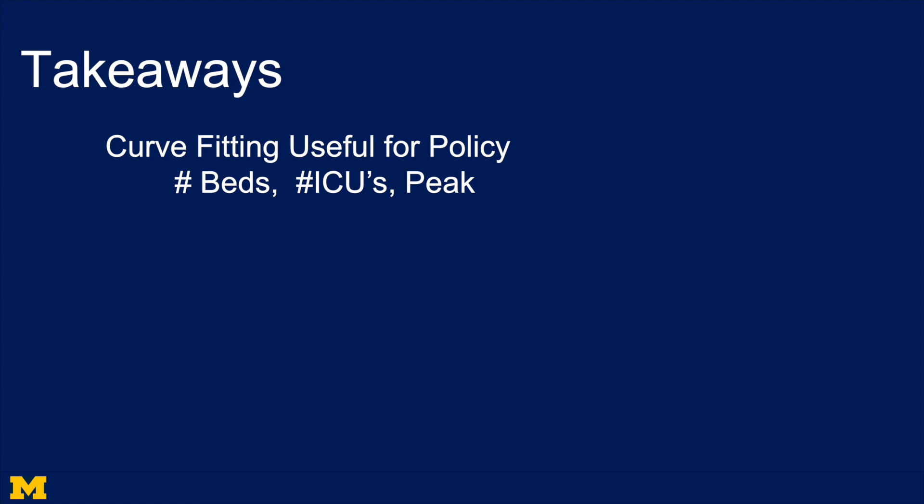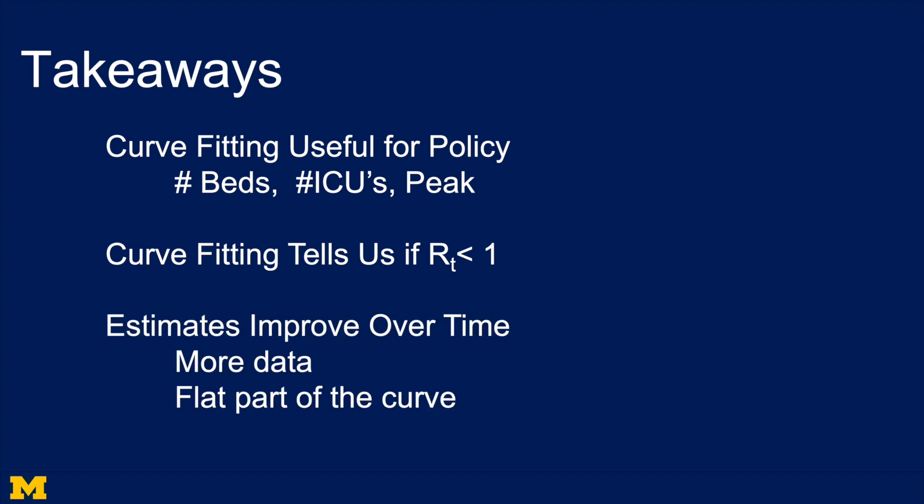So, takeaways. First, these models are very useful for policy — we predict the number of beds, the number of ICUs, and the peak. Not exactly, but imagine trying to do this without a model. Second, the curve fitting tells us if our effective reproduction number is less than one — are we stopping the spread? If not, we need more draconian measures; if we are, we can start loosening things up. This is the threshold or tipping point for whether we're stopping the spread or not. Third, these estimates are going to improve over time: first because we'll have more data, and with more data you can fit a curve more precisely; and second, as we move to the flat part of the curve, it's easier to predict.